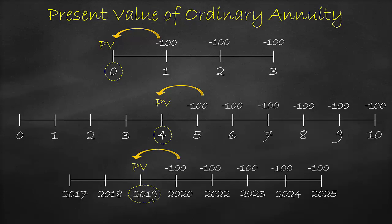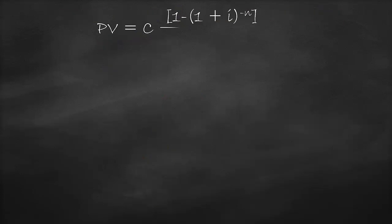Next, this is the present value formula. In this formula, we have four variables: the present value (PV), the equivalent cash flow (C), the interest rate (I), and the number of periods (N). Consequently, we can rearrange this formula to get the equivalent cash flow or the number of periods.